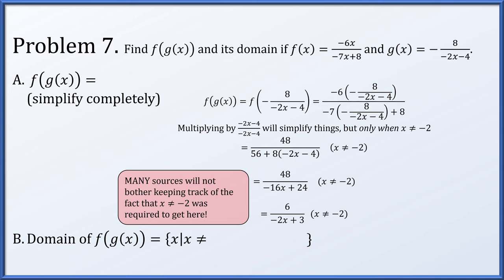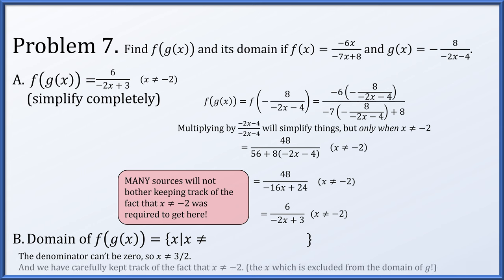Many sources are cavalier about not tracking that our simplification required x not equal to minus 2, since you cannot even compute g of x for that value. Our simplified composition is 6 over negative 2x plus 3 for all x's except minus 2. Setting the denominator equal to zero also excludes x equals 3 halves. So the domain of f of g is all x except 3 halves and negative 2.